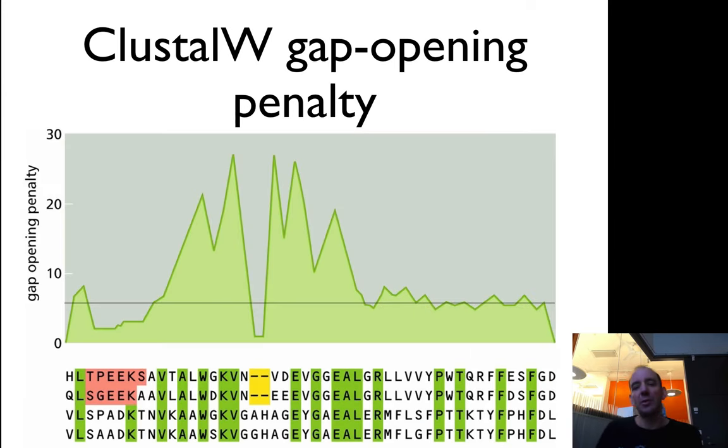What ClustalW does is it has a varying gap opening penalty. If you align something to a region with many gaps already, the gap opening penalty gets lower. It tries to get all the gaps occurring in the same place, which probably makes biological sense, because otherwise you often end up with alignments that have a lot of gaps. This is an ad-hoc heuristic method.